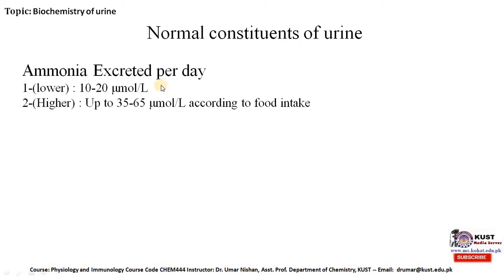Among other normal constituents of urine, we have ammonia excreted per day. In lower situations it can be from 10 to 20 micromole per liter of urine, while in higher situations it can be up to 35 to 65 micromole per liter according to food intake. These are the possible values of ammonia excreted in urine per day.